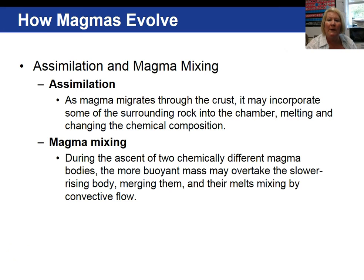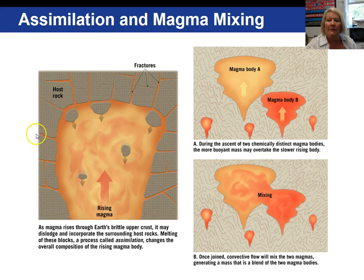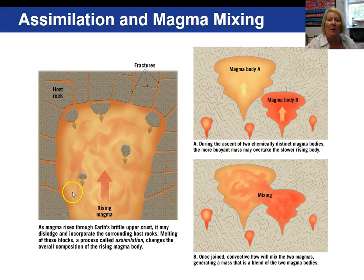Assimilation is another process that can produce a new magma composition. As magma moves through the Earth, it can drag in and incorporate solid rock. These xenoliths can then change the composition of the magma. Magma mixing occurs when two different magmas join together into one. In this image, magma coming up through the Earth's brittle upper crust is dislodging and incorporating the surrounding host rock, and melting of that host rock changes the overall composition of the magma body. A second image shows magma body A and magma body B joining together, resulting in a new magma composition.